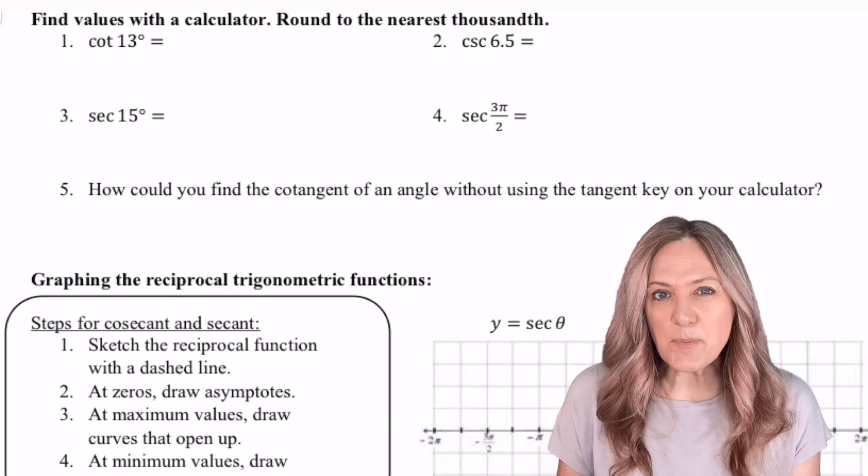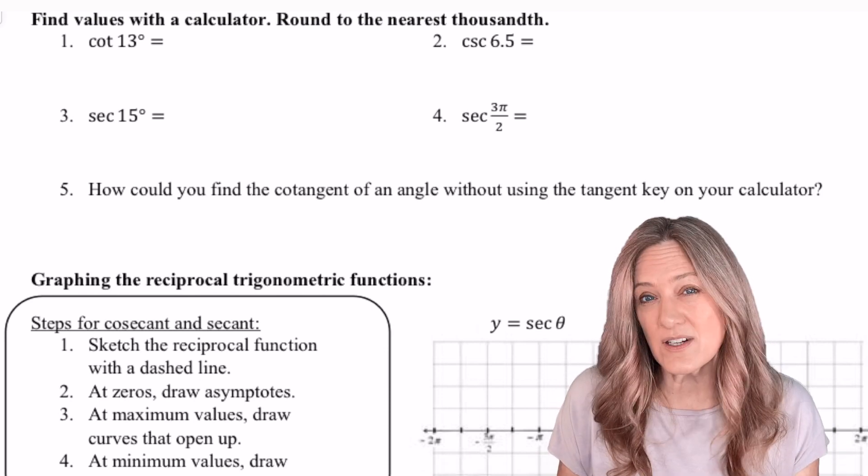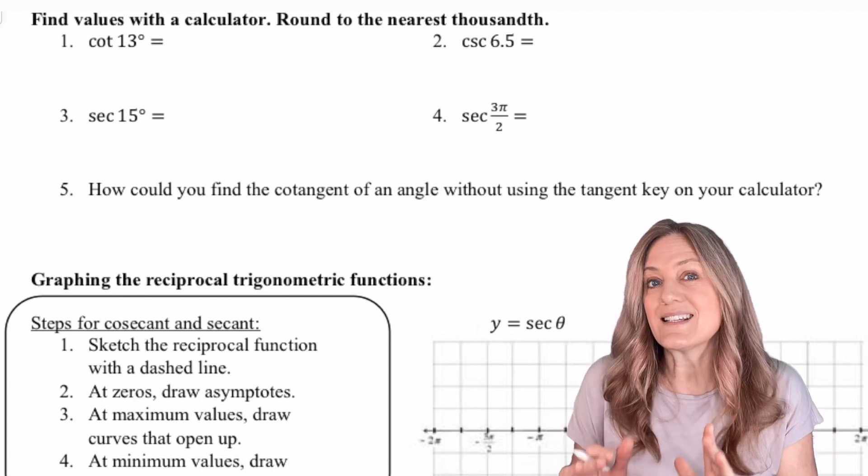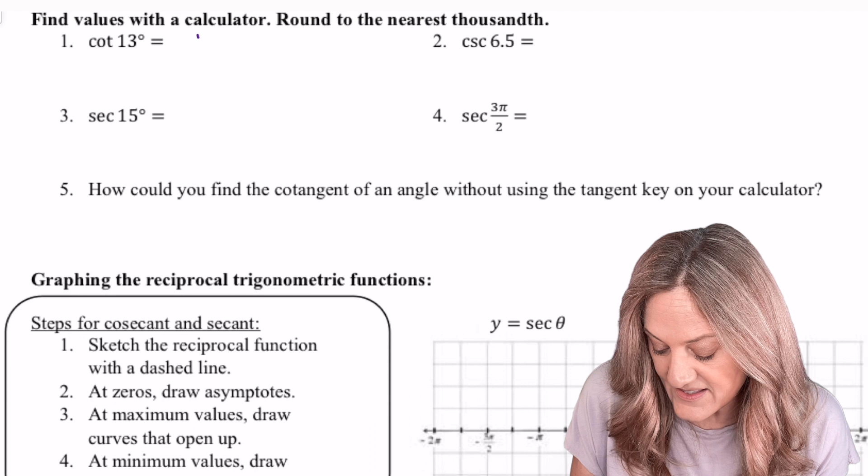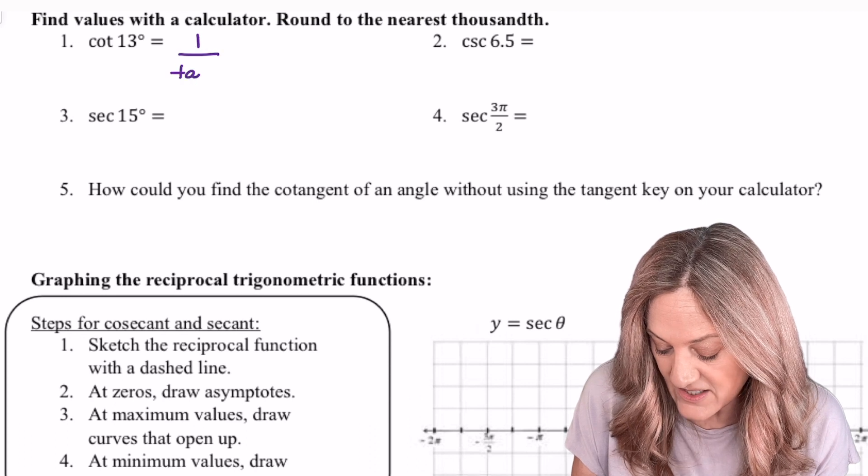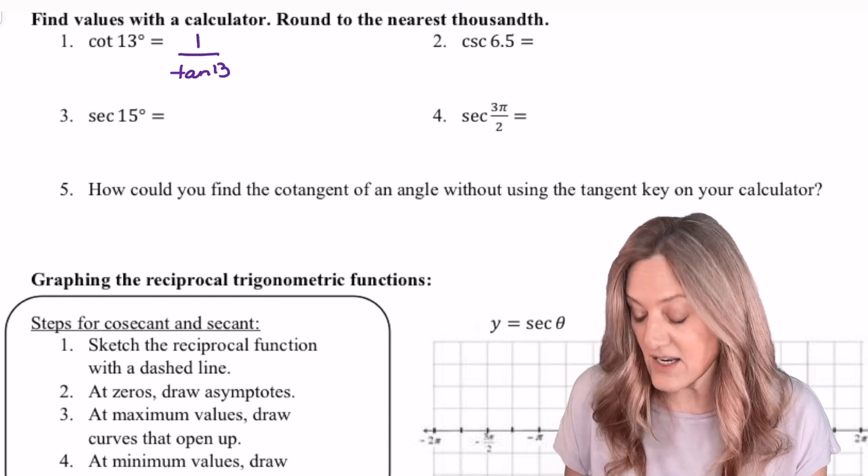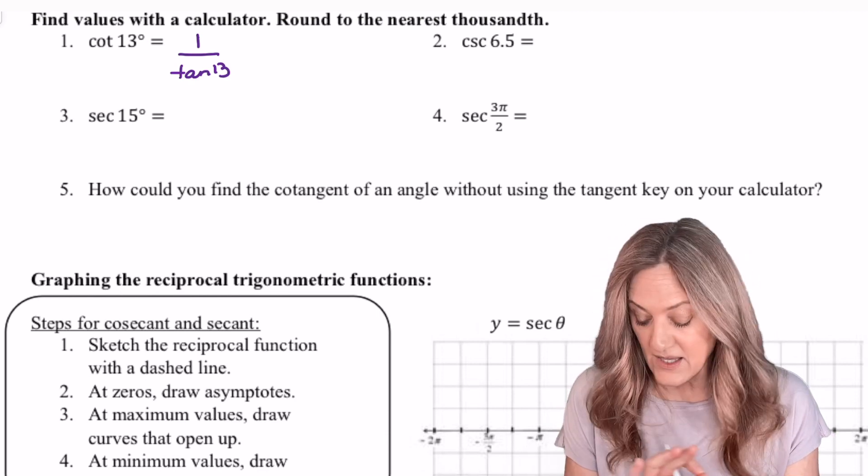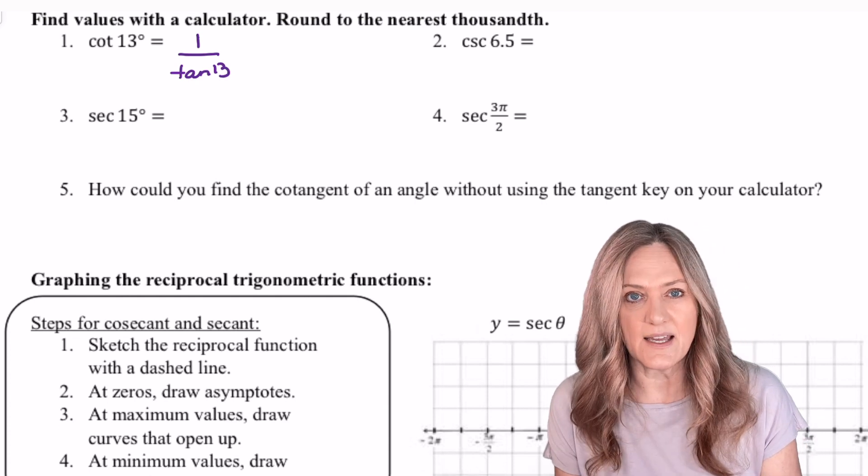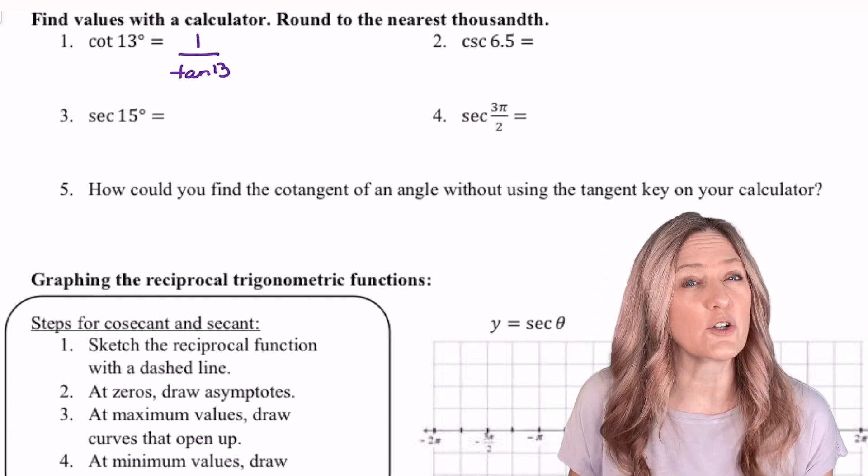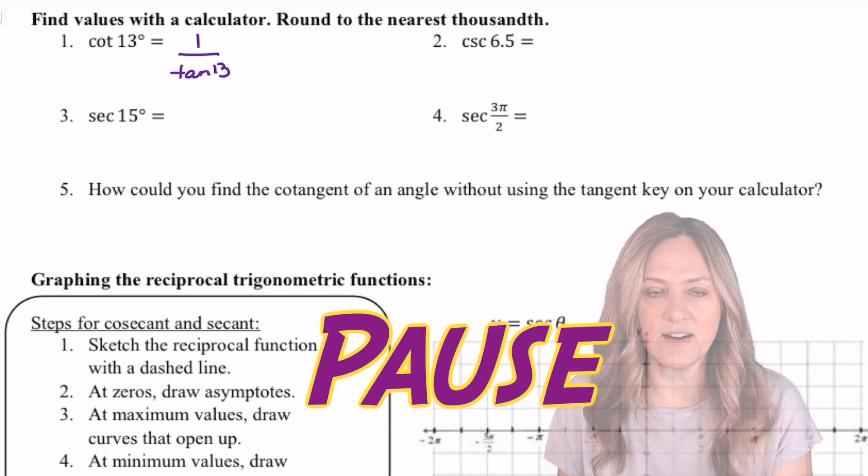Okay, grab your calculator. Let's practice typing these into our calculator. So for example, when it says cotangent of 13 degrees, what would I need to type in? There is no cotangent button. I need to go ahead and say 1 divided by tangent of 13 degrees and evaluate there. Round to the nearest thousandth. Also, keep in mind that we have degree setting and radian setting. If I'm not seeing that mark for degree, you need to go to mode, change to radian, and evaluate.